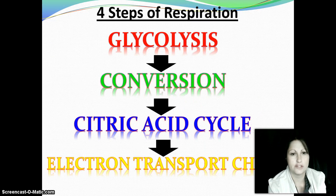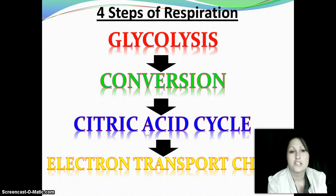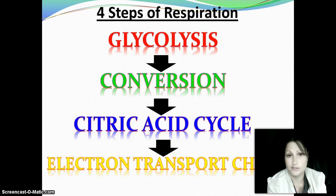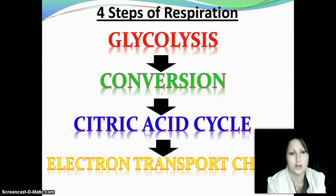The four steps of respiration are: glycolysis, conversion, citric acid — sometimes called the Krebs cycle — and the electron transport chain. Cellular respiration is something you need to look over a couple of times. You're not going to understand it the first time; you may not even understand it the second time. But hopefully after a couple of times of hearing it, it will start to at least make sense to you.